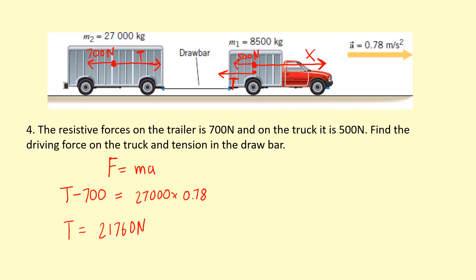Now that I have this tension I can use it for the truck. I'm going to write F equals ma for this one as well. So the resultant force is going to be x minus the tension minus the 500 is going to equal its mass times acceleration. So tension I know in this case. So that's going to be x. I'm going to bring the tension and the 500 to the other side. So this becomes 8500 times 0.78 plus the tension which is 21,760 plus the 500. That gives me 28,890 N of driving force.